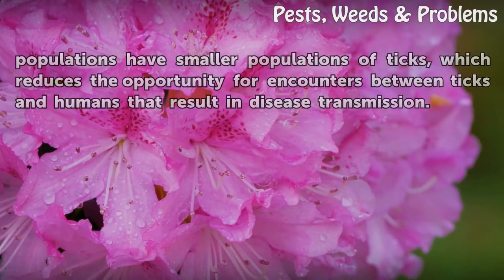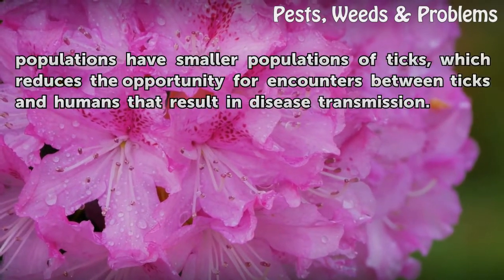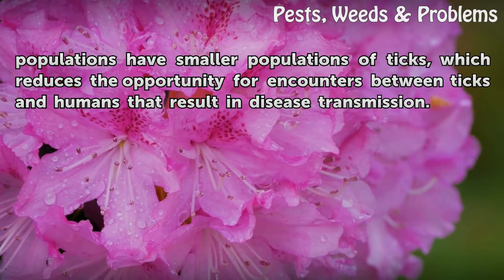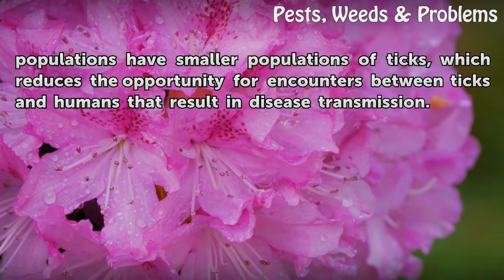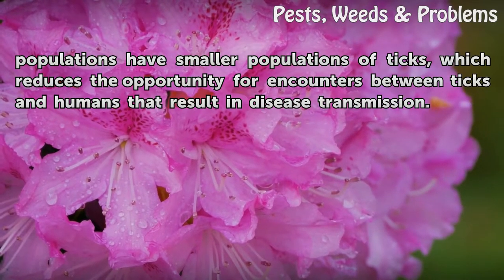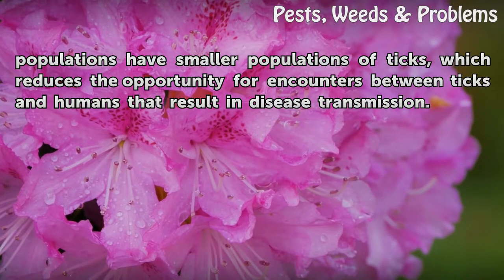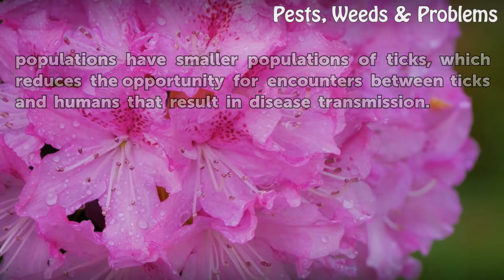Ecosystems with thriving snake populations have smaller populations of ticks, which reduces the opportunity for encounters between ticks and humans that result in disease transmission.